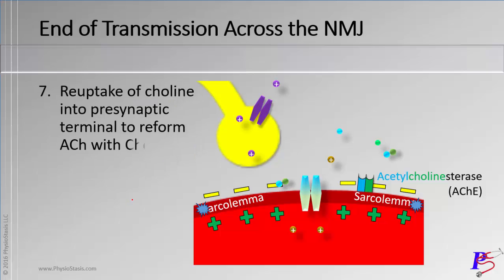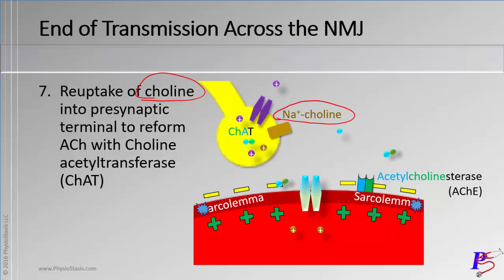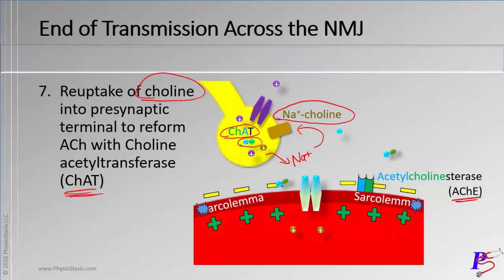After degradation, there's a reuptake of choline back into the axon terminal. Sodium comes along with choline through the sodium-choline transporter — this is a type of secondary active transport. The sodium-potassium pump (primary active transport) pumps sodium out, and when sodium comes back in, it pulls choline with it. The enzyme choline acetyltransferase — don't confuse it with acetylcholinesterase — helps combine the choline with acetyl-CoA to make new acetylcholine.